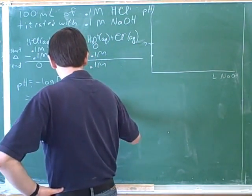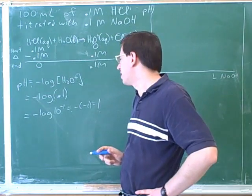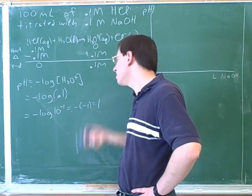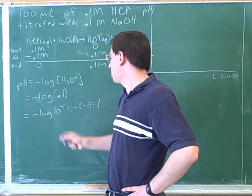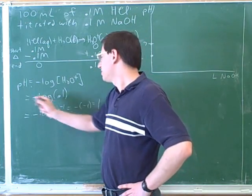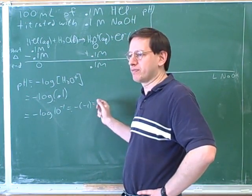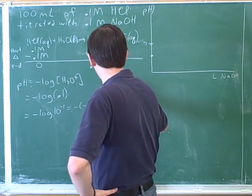And logarithms are just the exponents on the power of 10. So there should be negative negative 1, which is 1. So if something is a power of 10, we can take the log without a calculator. But it's always good to check with your calculator. All right, so the log of 0.1 is negative 1. So the negative of that log is positive 1. So we end up with a pH of 1.